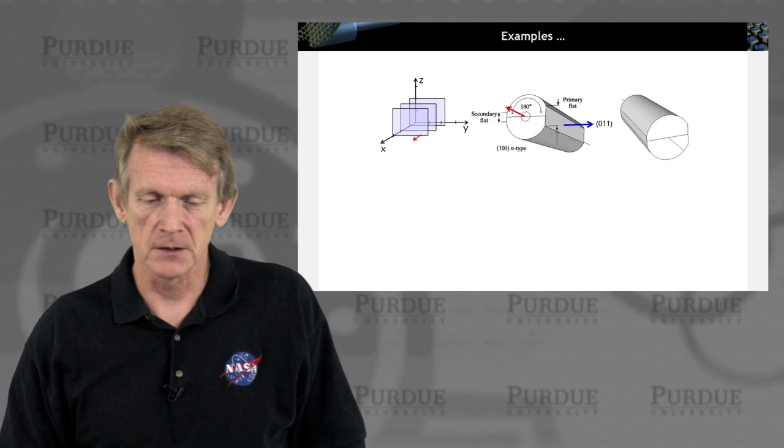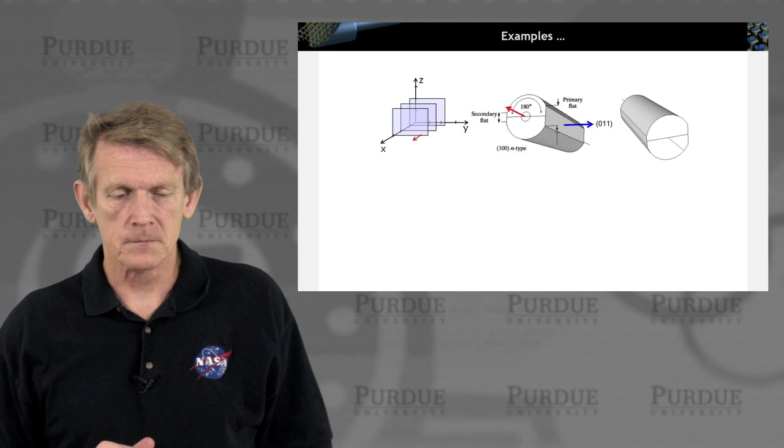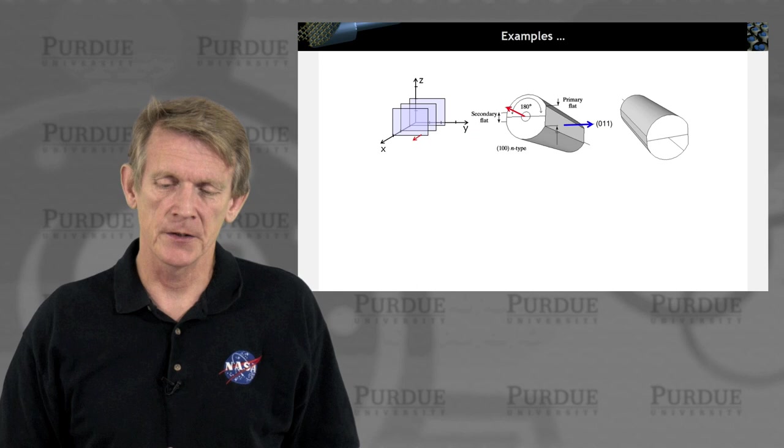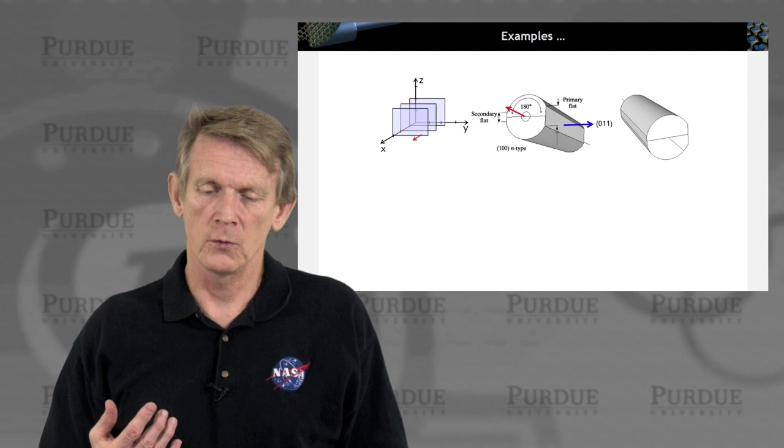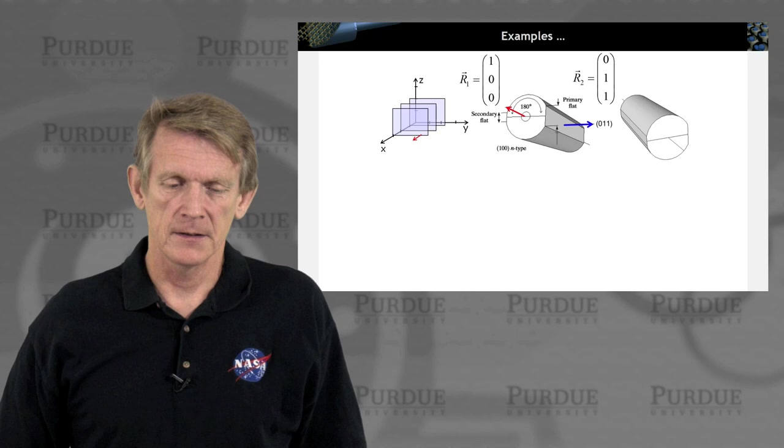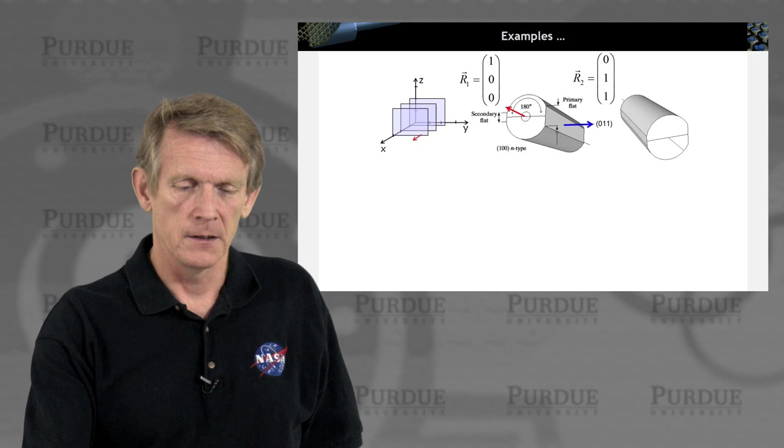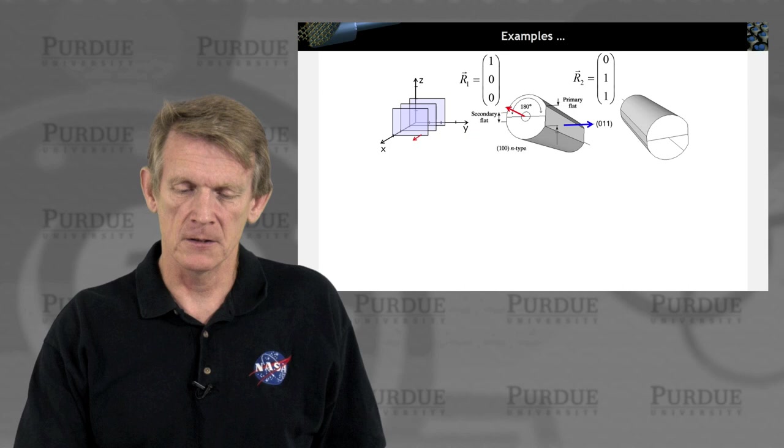Why is this relevant? Well, crystals are grown on an ingot in a certain direction. They are sliced from this ingot, and they are marked with these wedges. And you kind of need to know the surfaces of these crystals, and that is how they are encoded. So let's take two vectors here. A vector in the z direction, 1, 0, 0, and a diagonal in the y in the z direction.